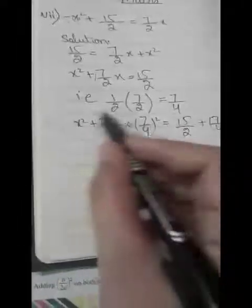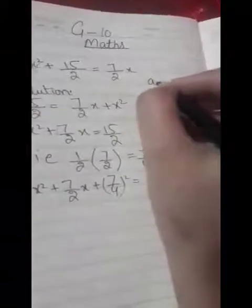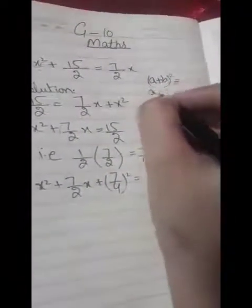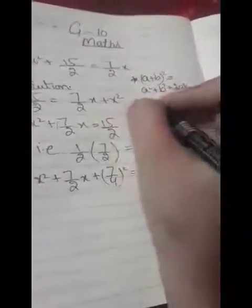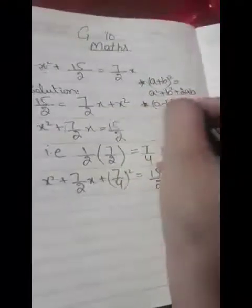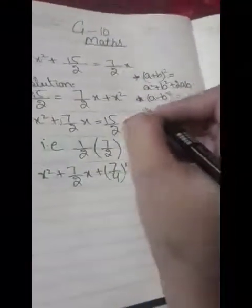Now we use the formula. For (a+b)² we have a² plus b² plus 2ab. For (a-b)² we have a² plus b² minus 2ab.